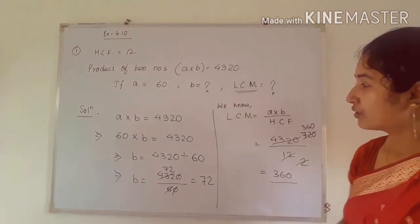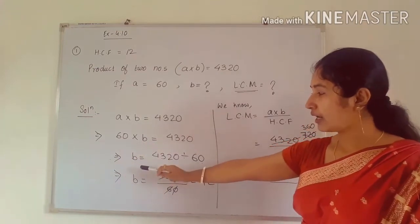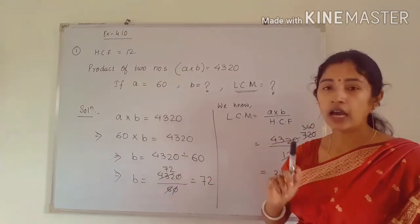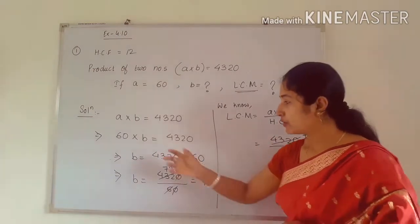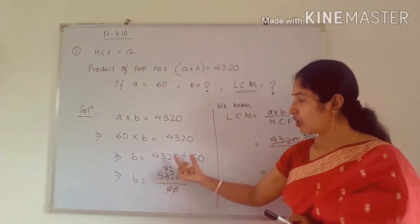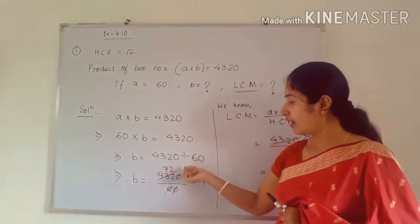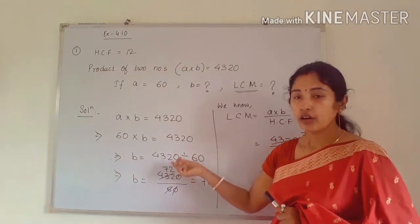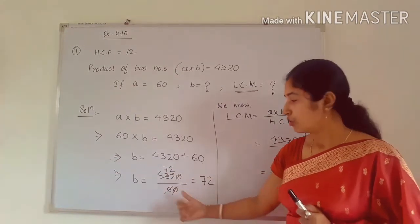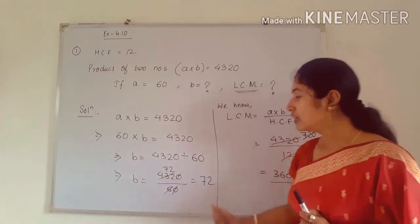The product of the two numbers is given, and one number is 60. To find the second number B: since the product of two numbers is 4320, transfer 60 to the other side — it gets divided. So 4320 ÷ 60 = 72. The second number is 72.